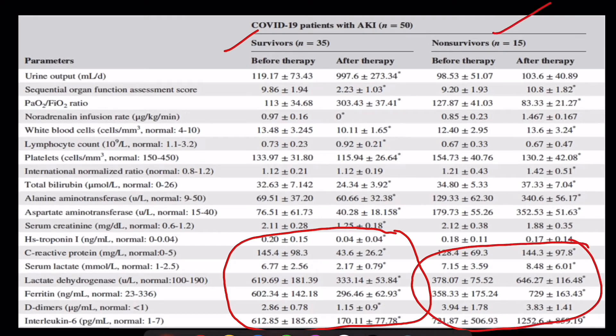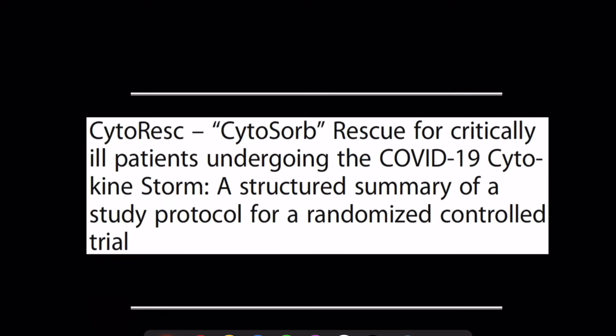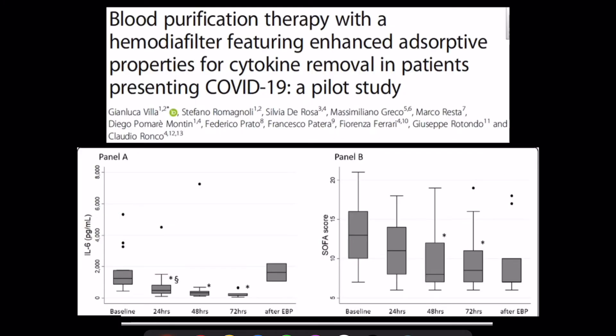In terms of clinical outcomes, the SOFA score and PF ratio all improved after use of these devices in survivors, while in non-survivors reduction was not observed. There is also a large ongoing study in critically ill COVID-19 patients with cytokine storm, and the results may add further to the available data.